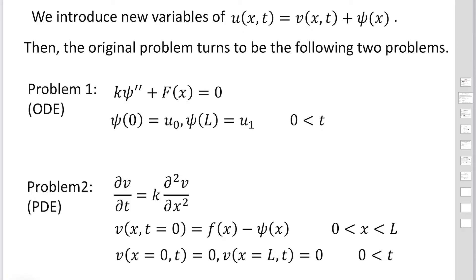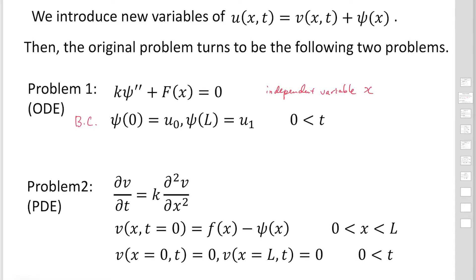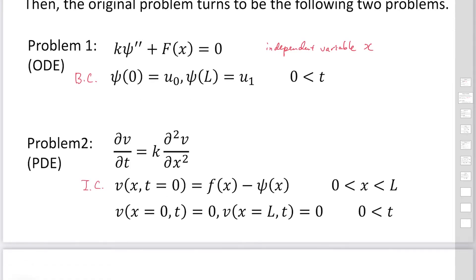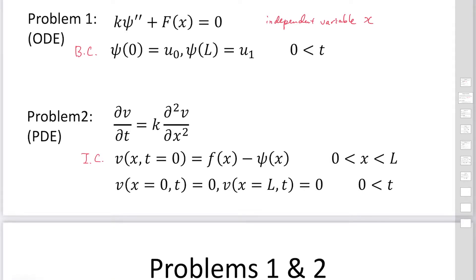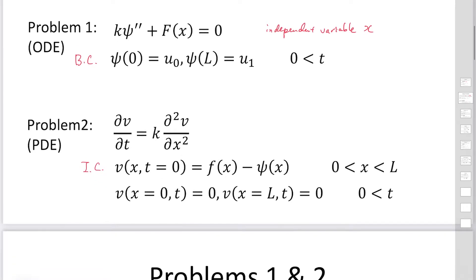In this ODE, there is only a single independent variable, x. The boundary conditions for Pc are: Pc equals u0 at x equals 0, and Pc equals u1 at x equals L. The second problem is the equation for V: the partial derivative of V with respect to t equals k times the second derivative of V with respect to x. The initial condition for V becomes F(x) minus Pc(x).